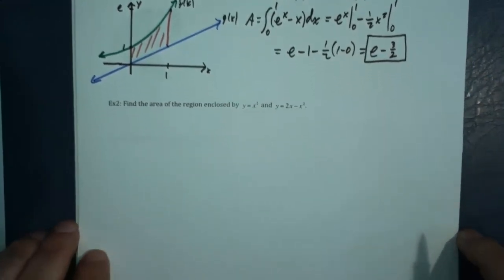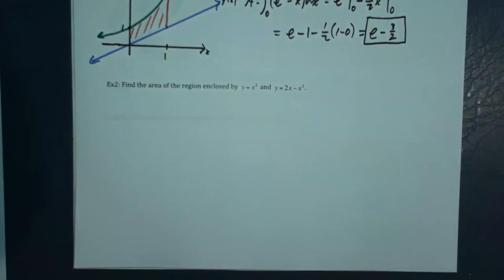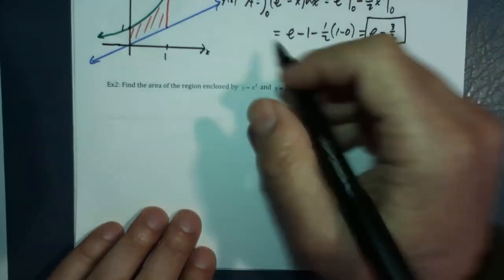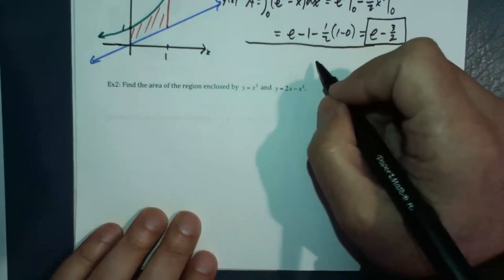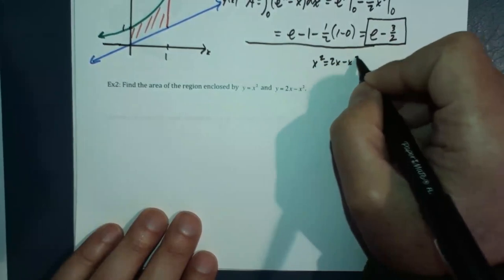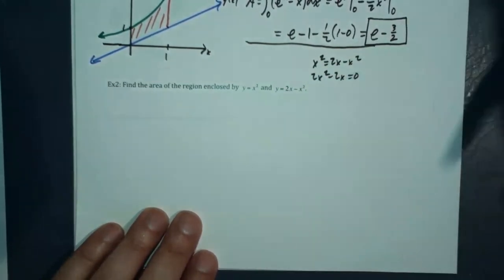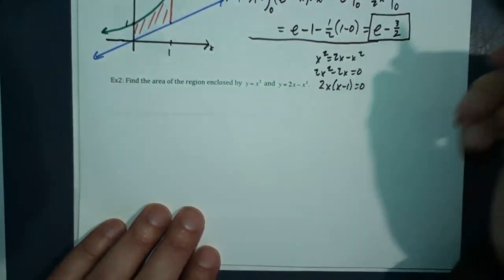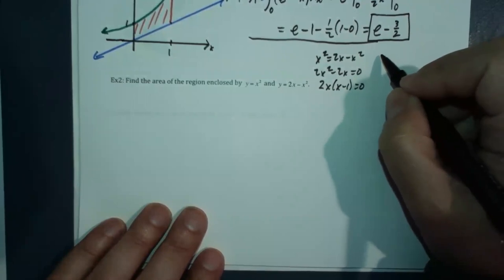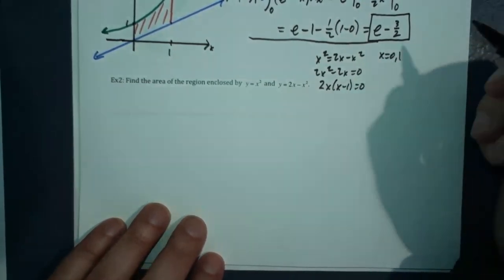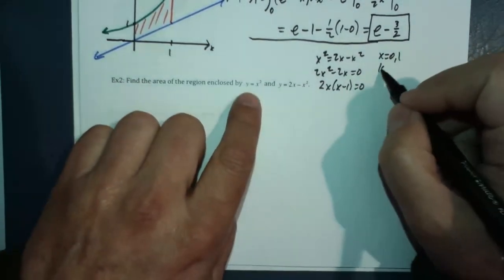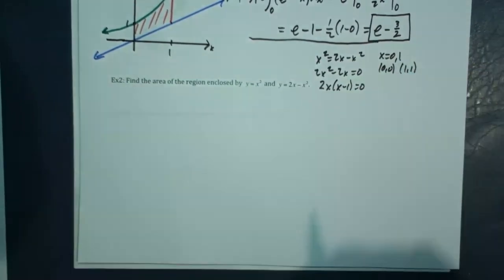For part two, we need to find where the two curves intersect, since we want the area of the region enclosed by them. Setting the two functions equal to one another, we can factor out 2x, and they intersect at x equals 0 and x equals 1. Plugging in, we get the points (0, 0) and (1, 1) as points of intersection.